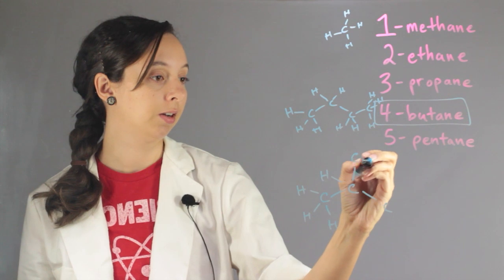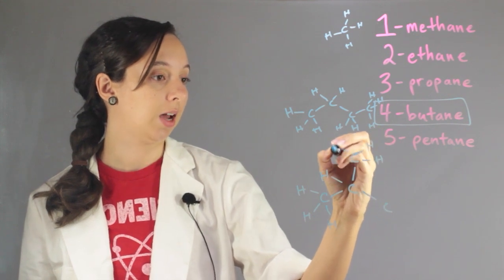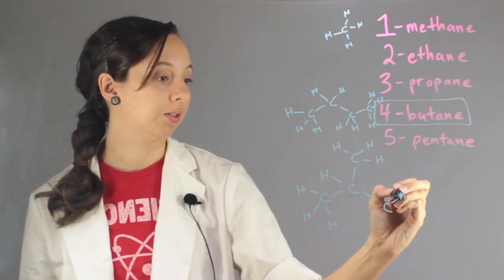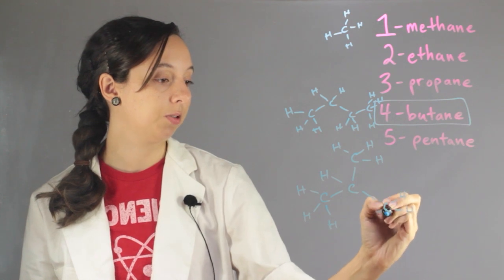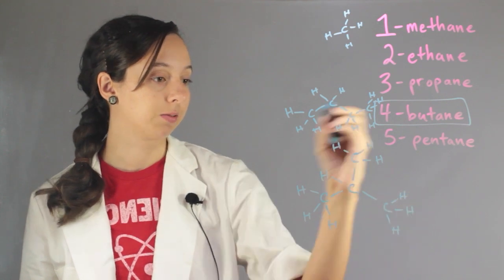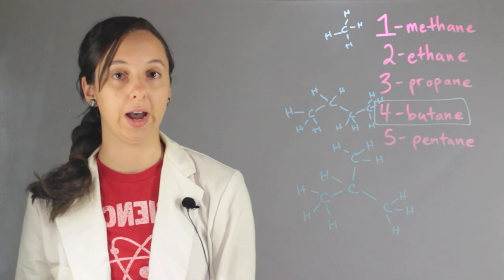But it's kind of like a cousin. And this is named isobutane. And so in chemistry, if something is close but not exact, kind of like the relationship between these two guys, we're going to call them isomers.